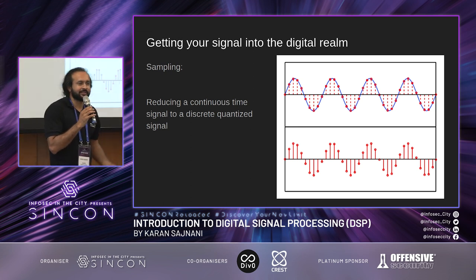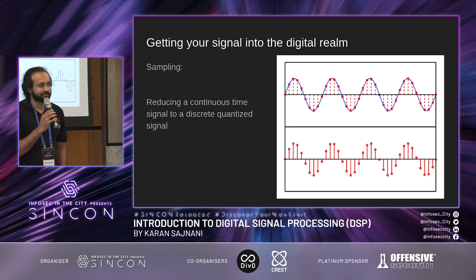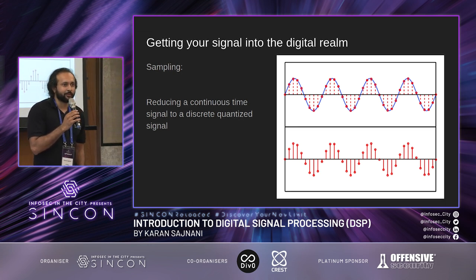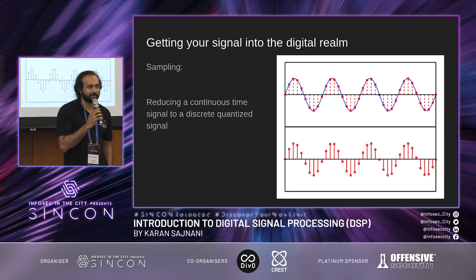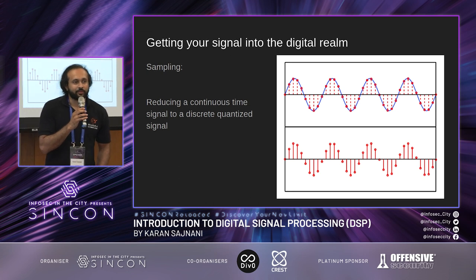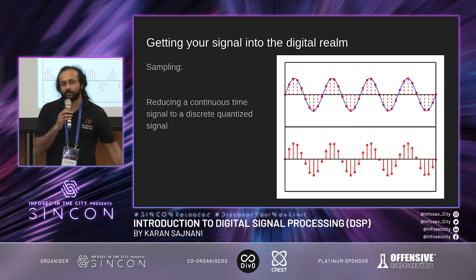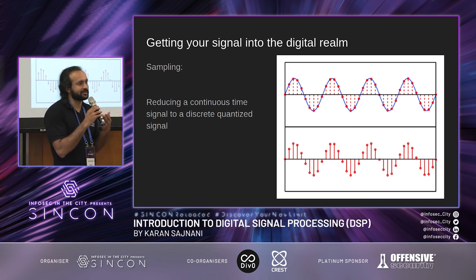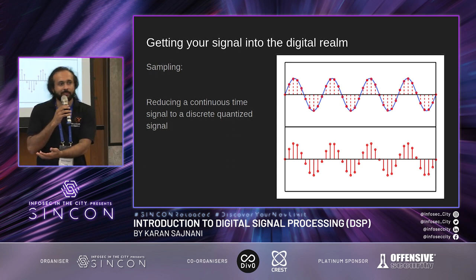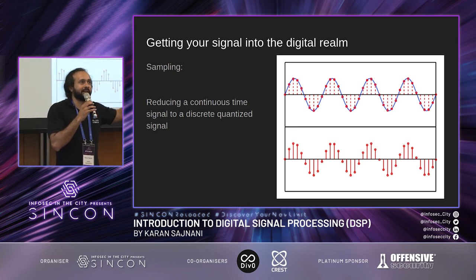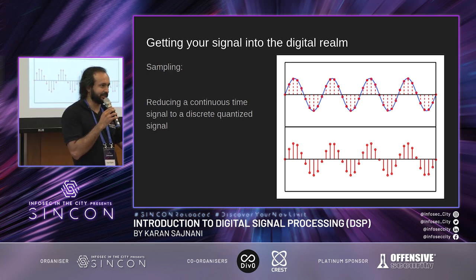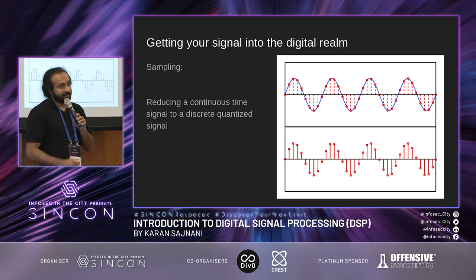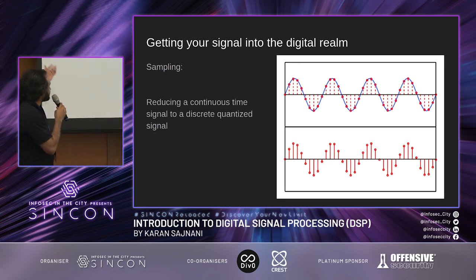How do you get an analog signal into the digital realm? Anyone heard of sampling? Your sound cards — 44.1 kilohertz, CD audio 48 kilohertz. When you talk into a microphone, an acoustic wave hits the transducer, being converted into a continuous signal of electric current. The sound card on your computer is looking at that electronic signal and 48,000 times per second it is taking a reading — the amplitude, frequency, phase. That's sampling: reducing a continuous time signal to a discrete quantized signal. That's what your SDR hardware is doing.